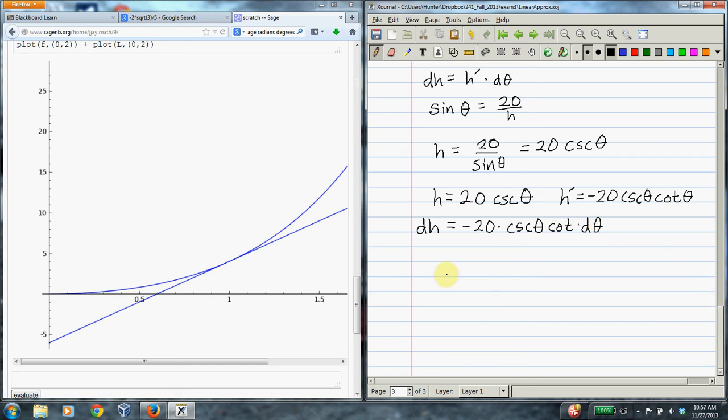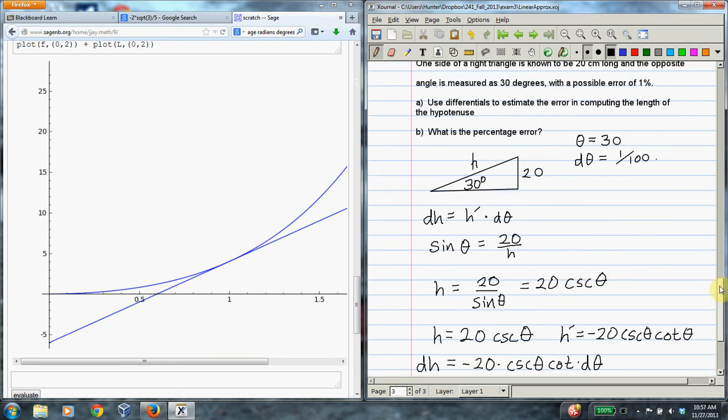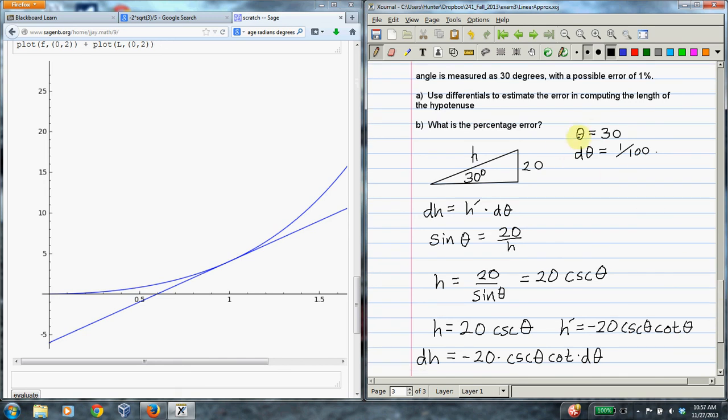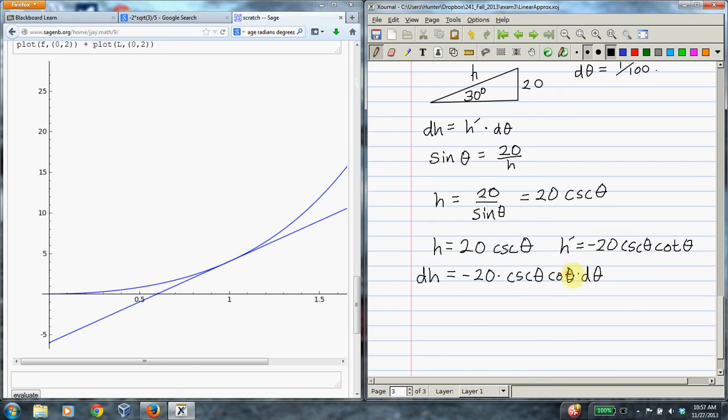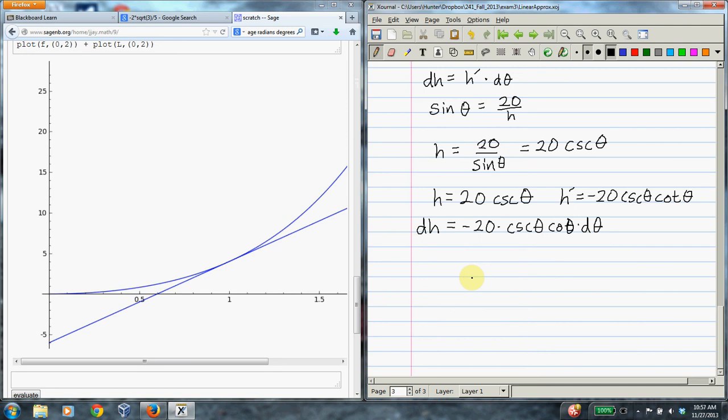So now dh equals -20 times csc(θ)cot(θ)dθ. All right, so this is very easy, and I would give you 90% credit if you did this, but we're supposed to plug in these actual values for θ and dθ, and this is where it gets a little bit tricky. I wanted to write t here. Thanks for being patient with me. So let's say that I do plug in 30 here. Okay, so I've got -20 times csc(30°) times cot(30°), and times dθ, which is 1 over 100.